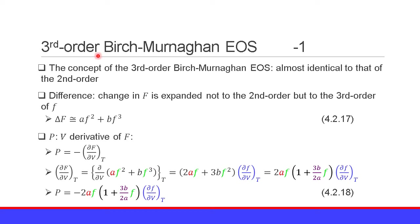Next, let us derive the third-order Birch-Murnaghan equation of state. The concept is almost identical to the second-order case. The difference is that the change in Helmholtz free energy is expressed not to the second order but the third order of finite strain. Thus the increase of Helmholtz free energy delta F is approximately equal to A times f squared plus B times f cubed.